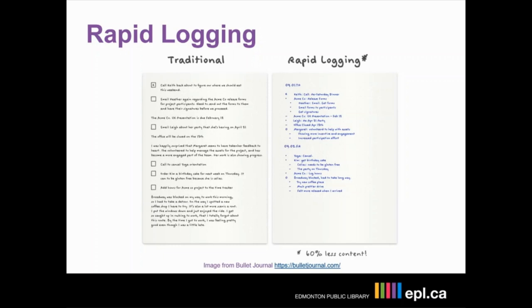Rapid logging is a way of capturing information as bulleted lists. It's also where the bullet journal gets its name. In this example, the same information is captured, but on the left it's actually written out as sort of long-form to-do or notes. That same information is captured on the right-hand side but with 60% less content — all the same vital pieces are there, but it takes up less space and it's a lot easier to reference.